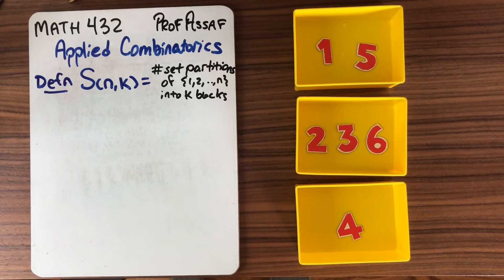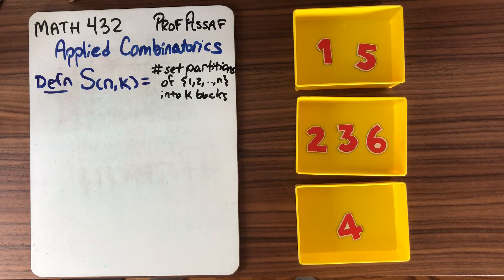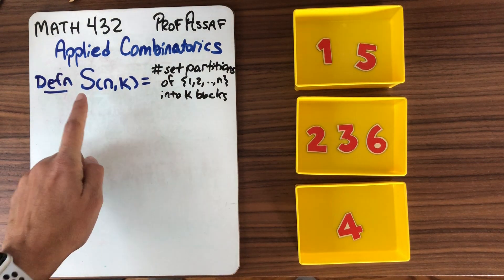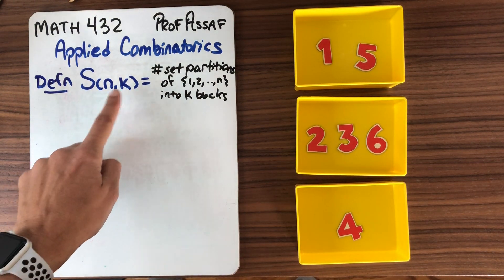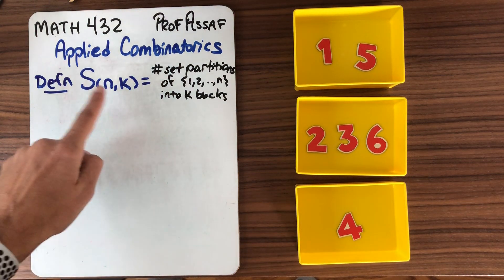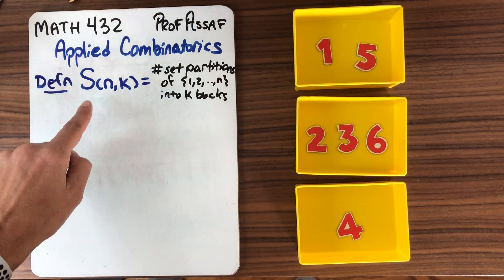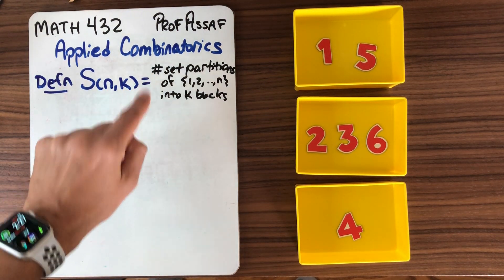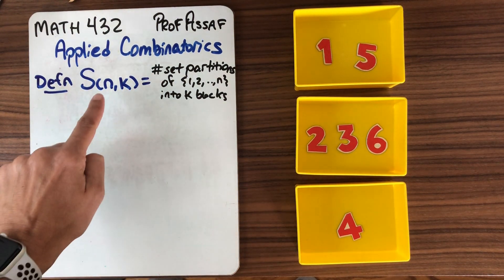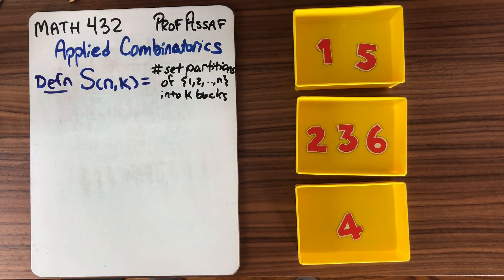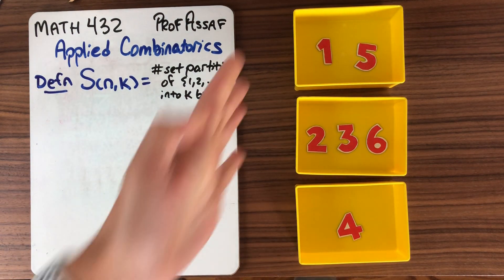This is Math 432, Applied Combinatorics. I'm Professor Asaph, and we're going to be talking again today about Stirling numbers of the second kind. We defined these before. The notation S(N,K) stands for the number of set partitions of the numbers 1 up to N into K blocks.